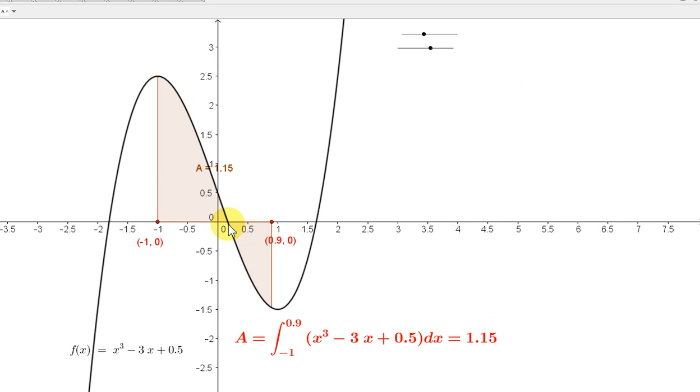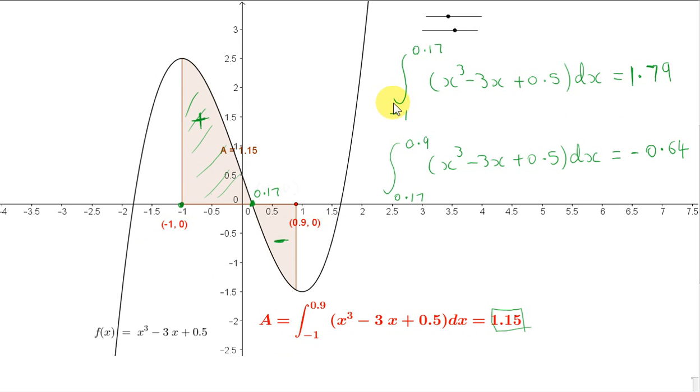Now, I'm going to use GeoGebra to get the coordinates of this point here. You can see that to two decimal places, the x value of this point is 0.17. So here is the integral of f of x dx from minus 1 to 0.17. You see that we get a positive answer.